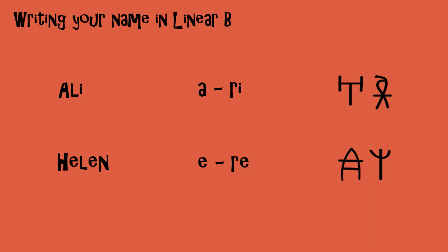Linear B also lacks signs for H. So if your name begins with an H, like Helen, then you would have to write it with the first vowel of your name, in this case E. Because every Linear B sign ends in a vowel, you should also leave out the final consonant of your name. So for Helen, you would just write it with two signs, the sign for E and the sign for RE, which you will remember can also represent LE as here.